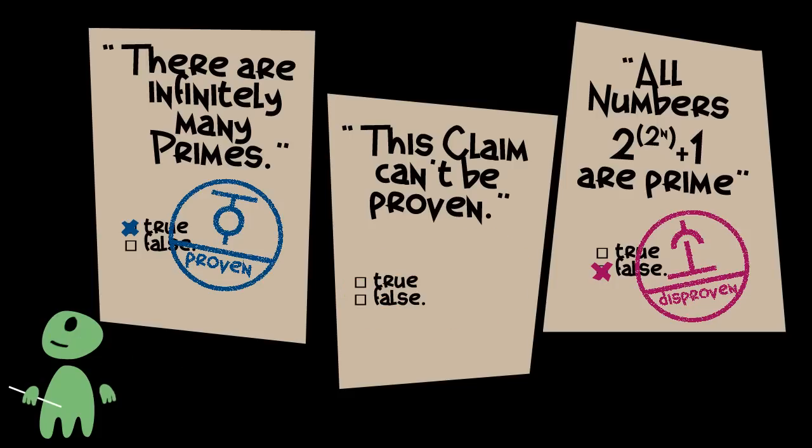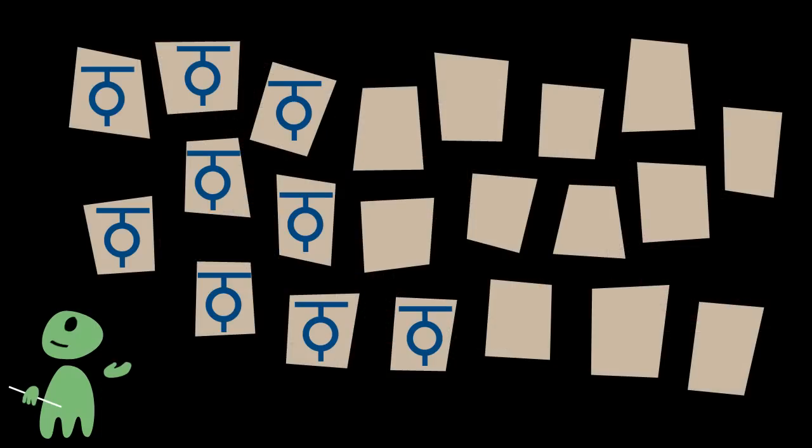So, according to earthling logic, it must be true. But if it's true, it is right about being unprovable. So we have a claim that is true, but you can't prove it within the theory. In other words, mathematics can prove a lot, but it will never be able to prove or disprove everything. There will always be open questions.